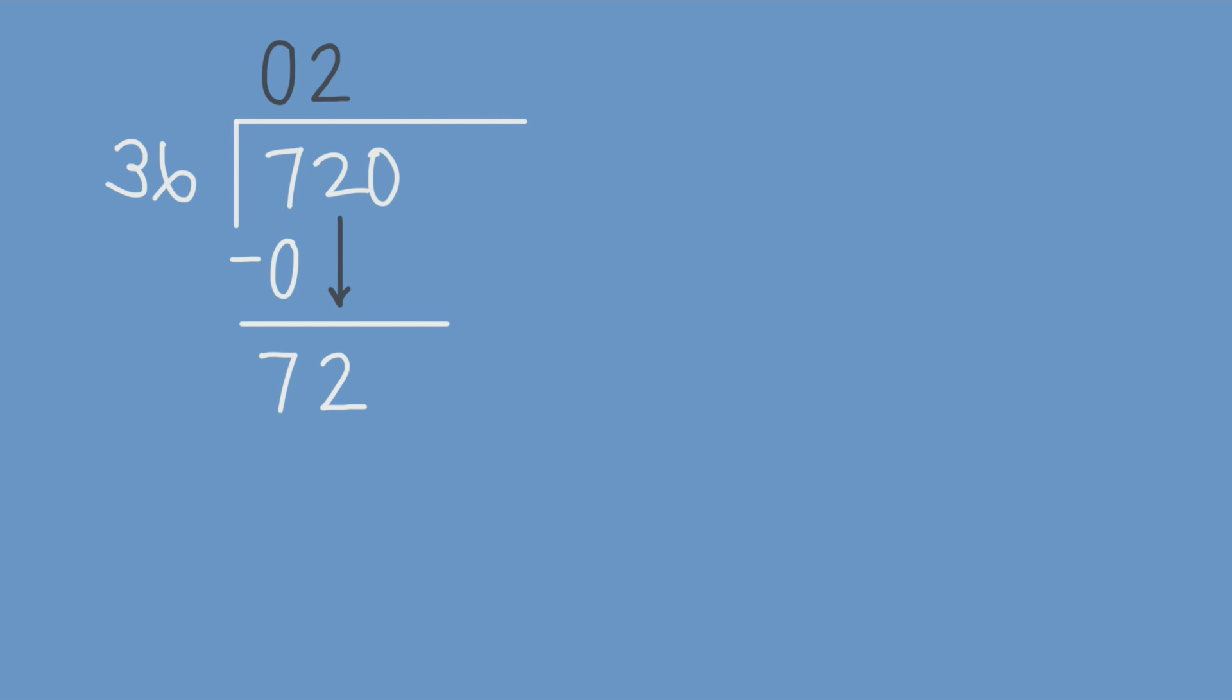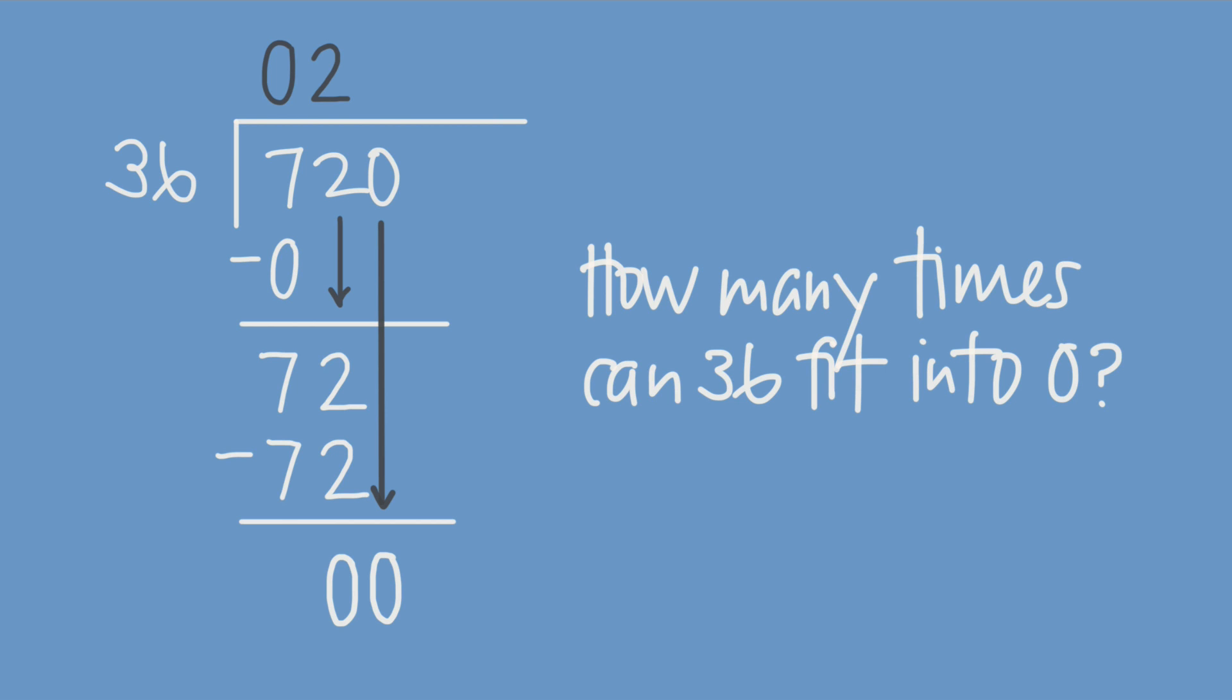We write a 2 above the 2 and we multiply 2 times 36 and write the answer down below. The difference of 72 and 72 is 0, so we have 0. We drop down the final digit 0 and ask, how many times can 36 go into 0? The answer is 0, so we'll write that above the last digit. How do we know we're done? Well if we continue the process, we'd multiply 0 times 36 and write that down below, but the difference of 0 and 0 is again 0. We're just going to keep coming up with 0's to write beyond the decimal point, so the answer is 20. Which means the village can build 20 log cabins with the logs they've already cut.